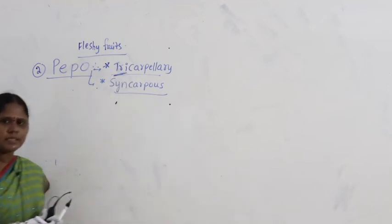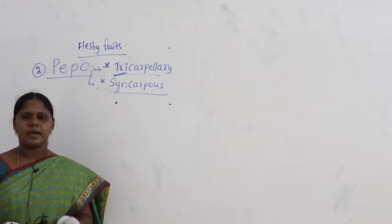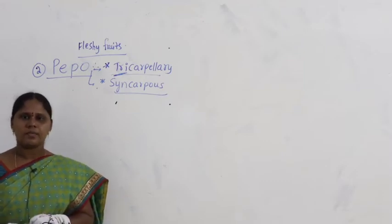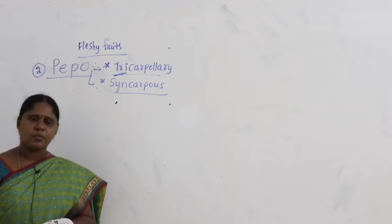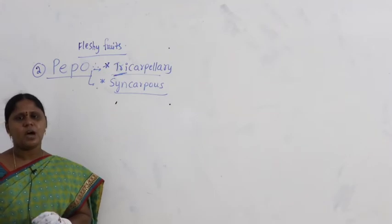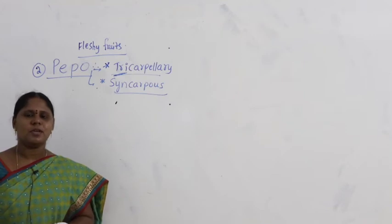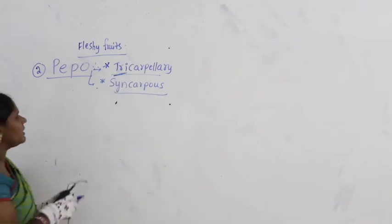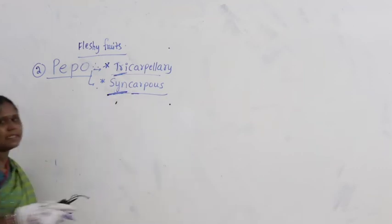We discussed earlier when we discussed about gynoecium — monocarpellary, bicarpellary, tricarpellary, pentacarpellary, multicarpellary. Here, tricarpellary means the number of carpels are three. Syncarpus means carpels are fused, and apocarpus means carpels are free.